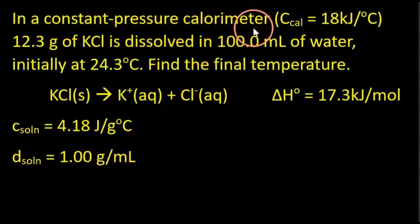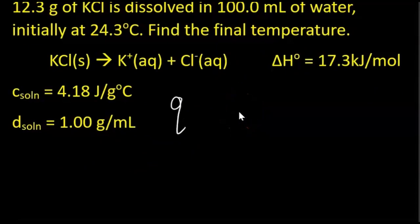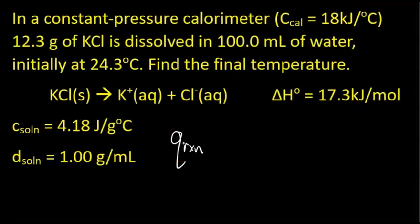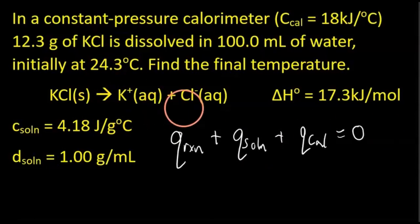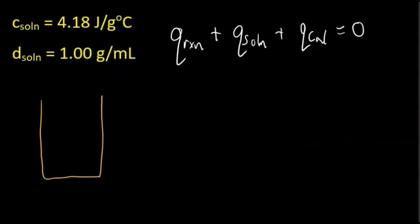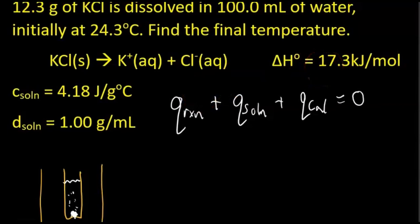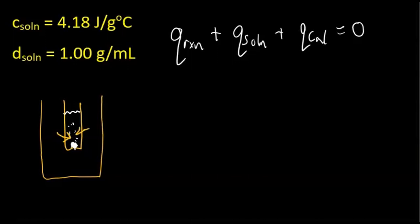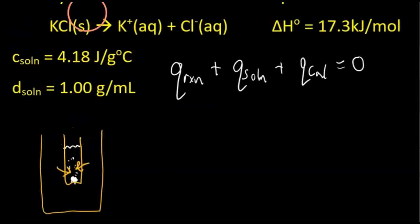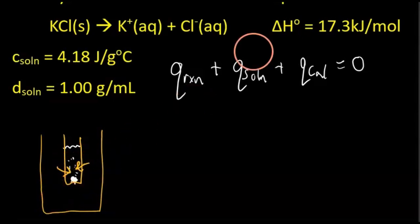For a constant pressure calorimeter, we start as always: the sum of heat transfers equals zero. So the heat of the reaction plus the heat transferred to or from the solution plus the heat transferred of the calorimeter all equals zero. The KCl dissolves and absorbs energy as heat because this enthalpy change is positive, so the solution and calorimeter get colder — the reaction is sucking up energy as heat.